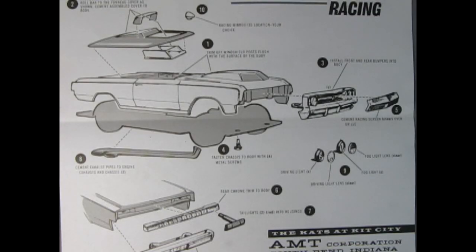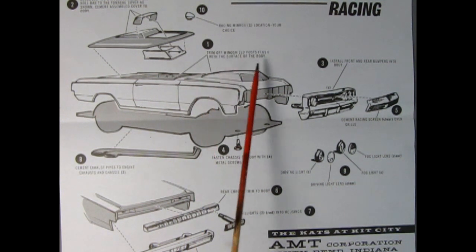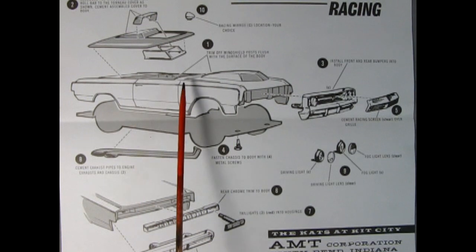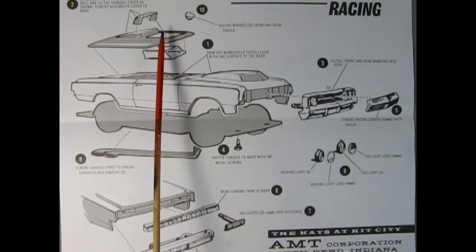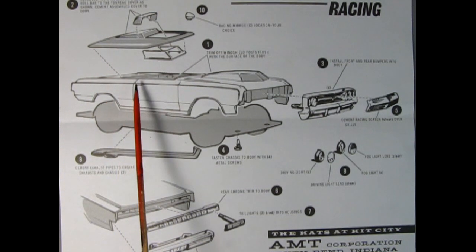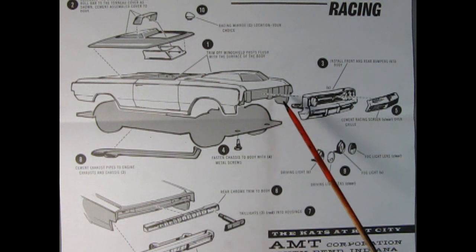If racing is your scene, then here's how you want to build your model. Step number one is to trim off the windshield post flush with the surface of the body. Then assemble the windscreen and roll bar to the tonneau cover and cement to the body. Next up, you want to use the stock grille and install that to the body and the stock rear bumper to the body as well.